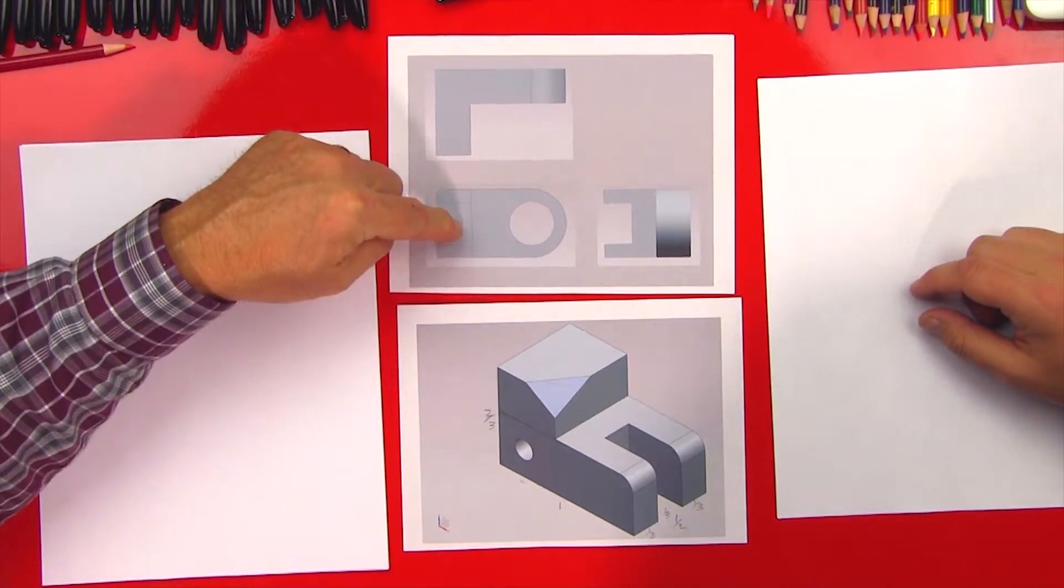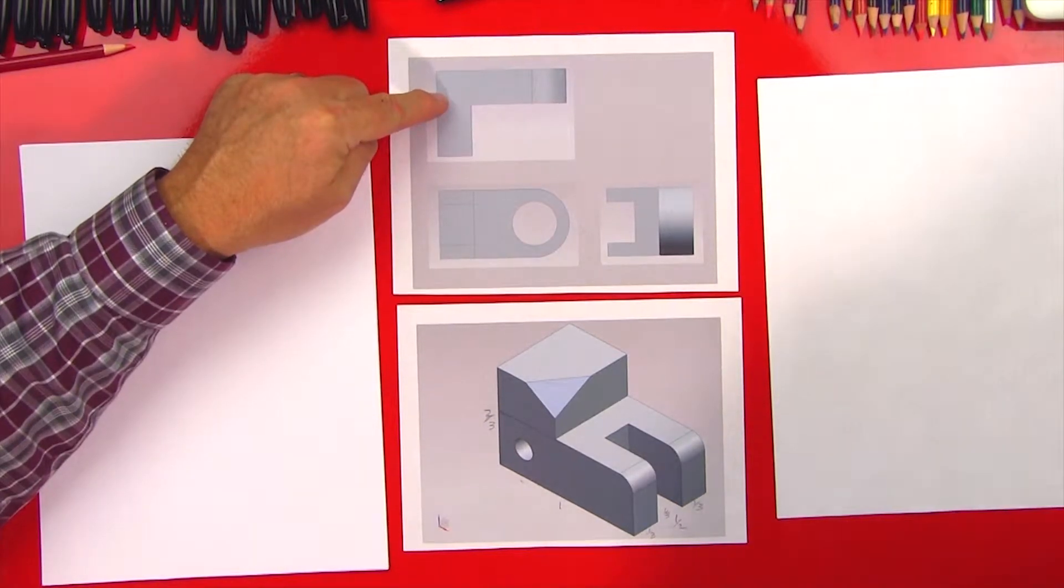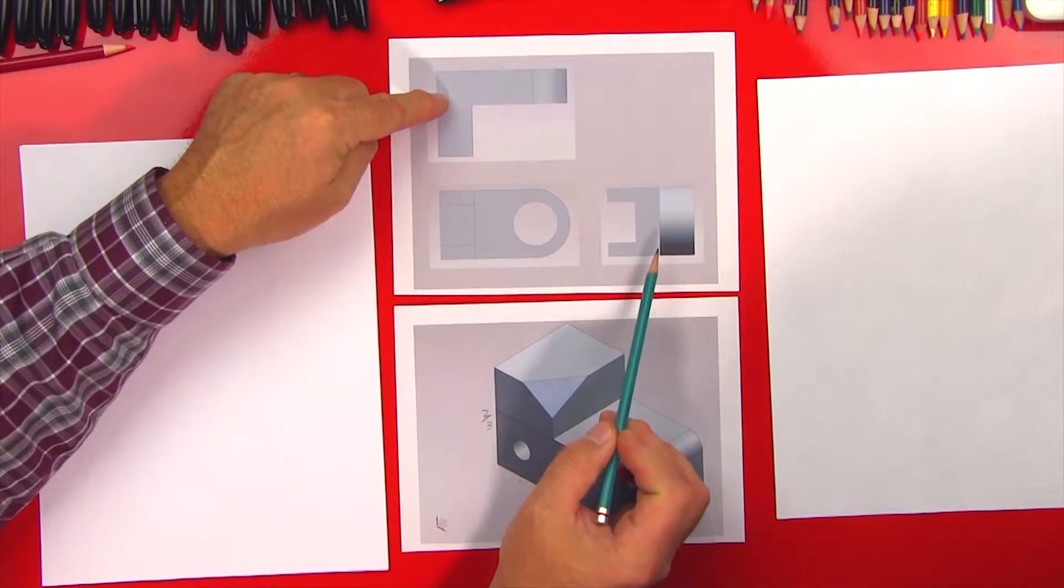So this is a front view. This is a top view of the same object. And this is its right side view.